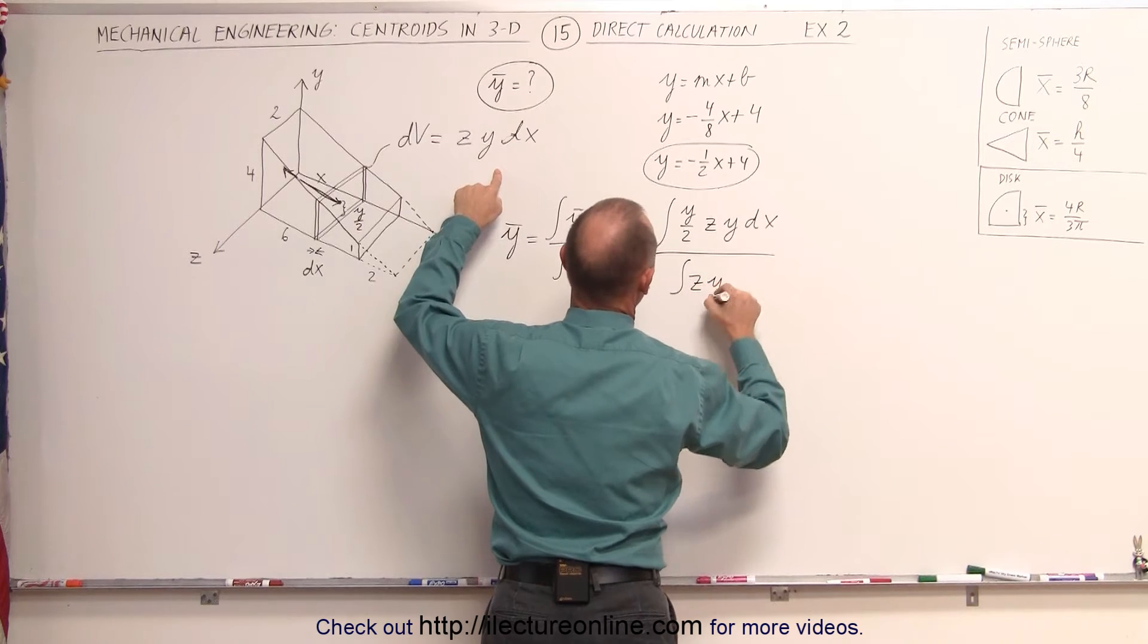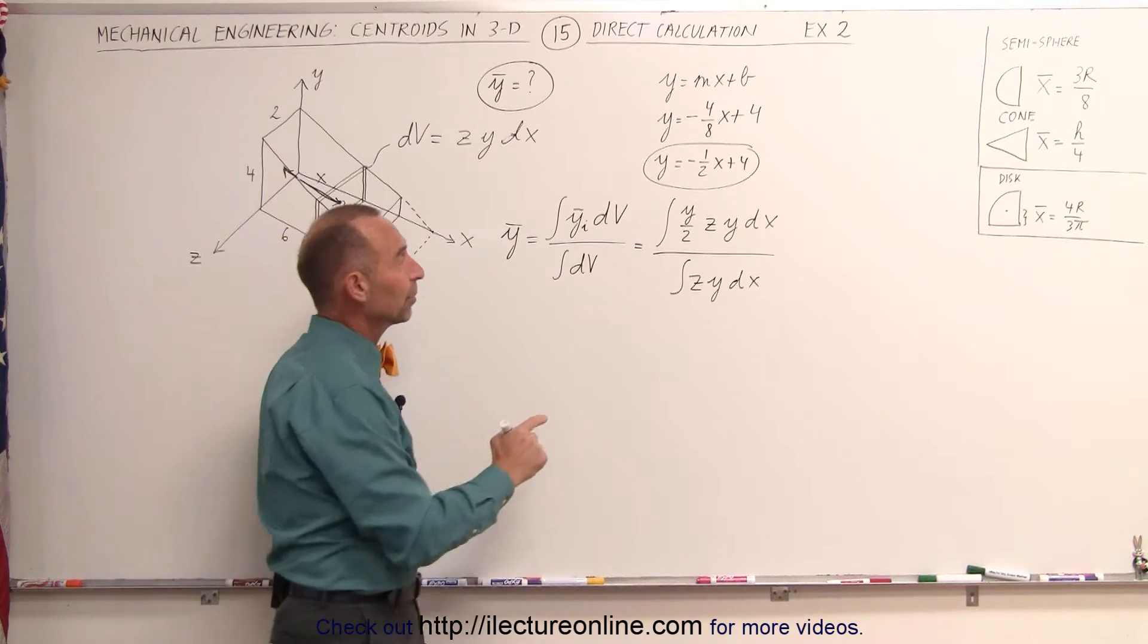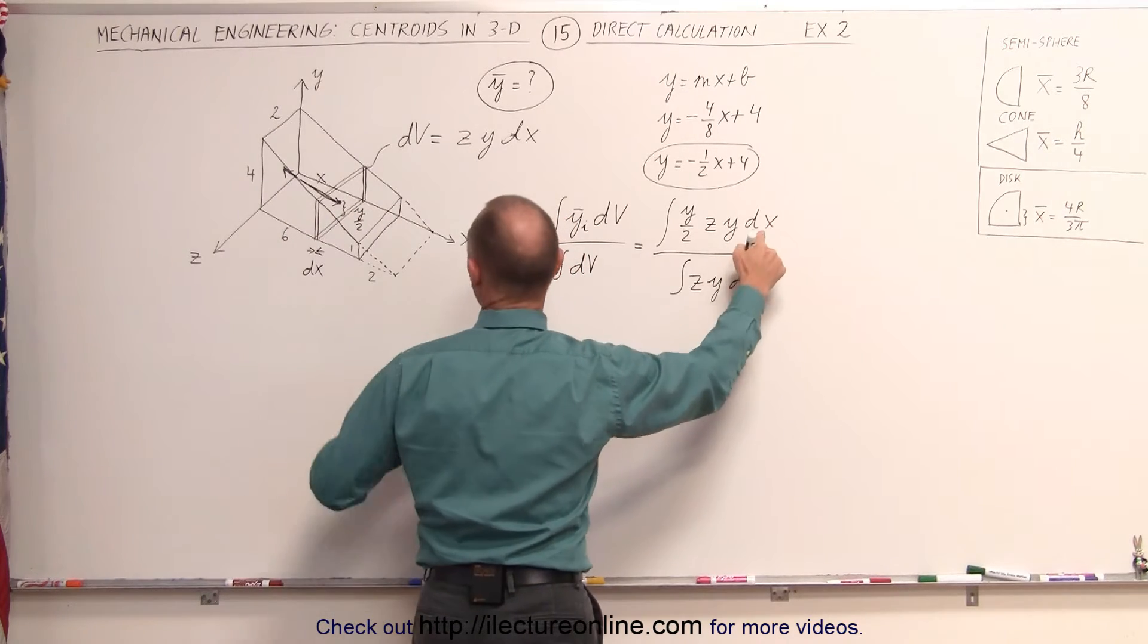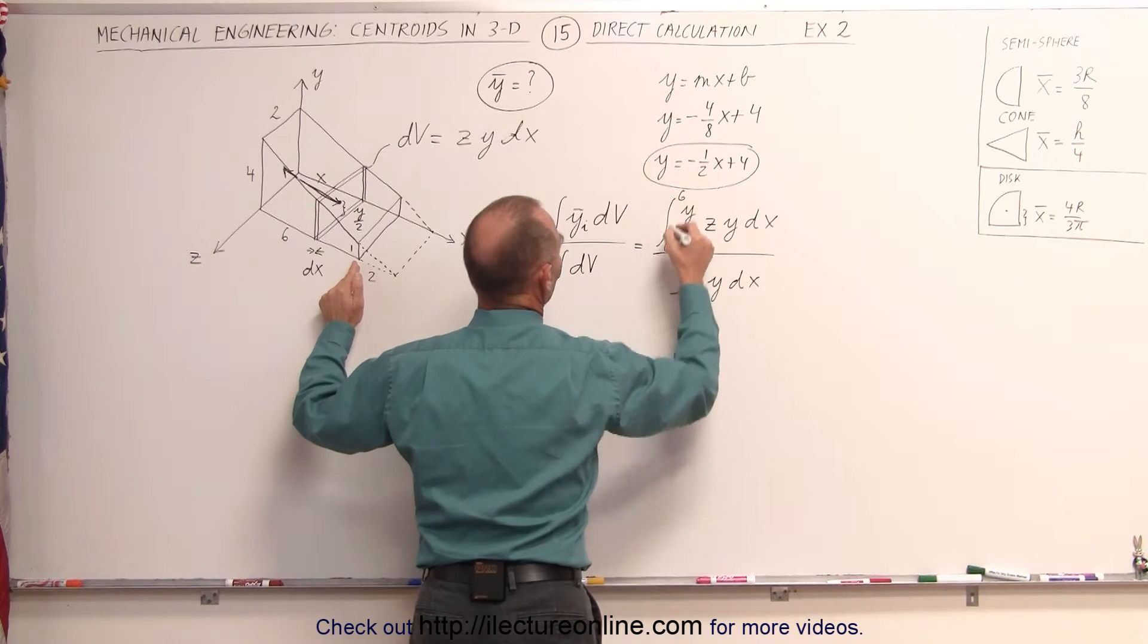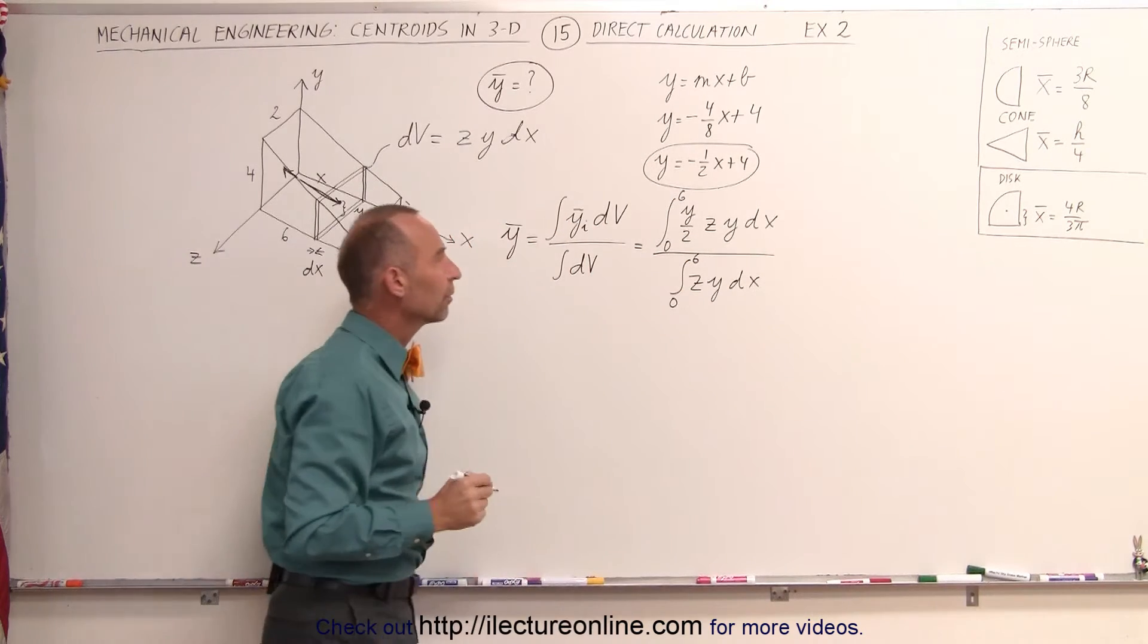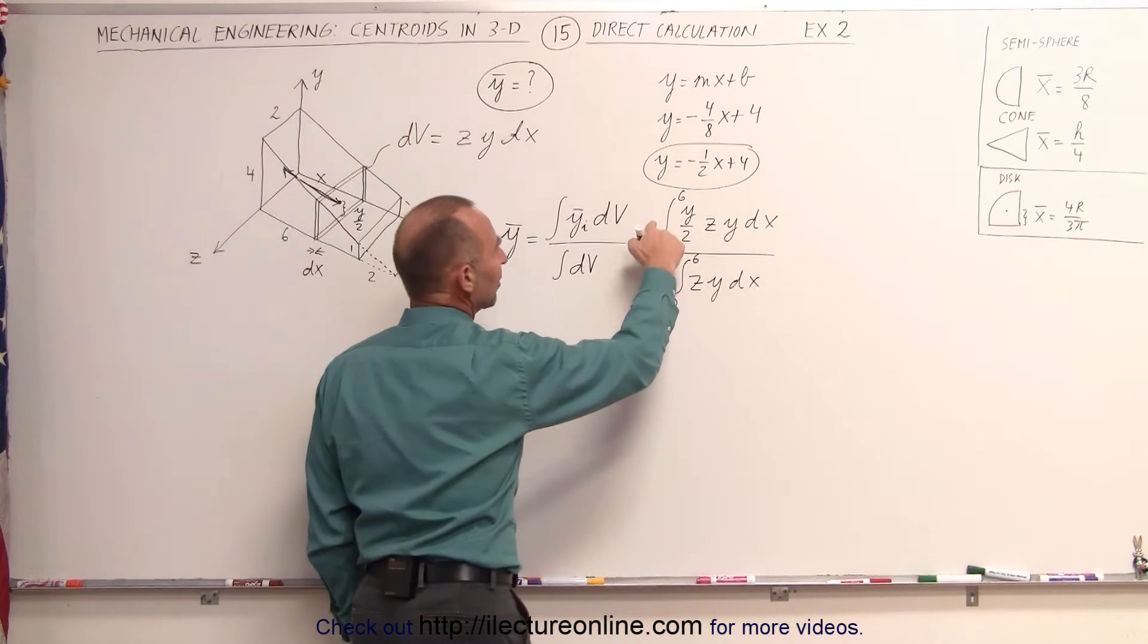So what we're going to try to do here is write every variable in terms of x, so the x limits are going to be from 0 to 6. From 0 to 6 are going to be the limits of integration. We can pull out a one-half here.